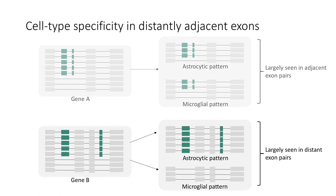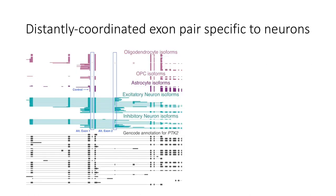And a lot of times it's seen in multiple cell types. However when you look at distantly coordinated exons they have very cell type specific patterns. So they will have like an astrocytic pattern and a microglial pattern which in pseudobulk seems like they're coordinated but here it seems like they're just constitutively expressed in that single cell type.